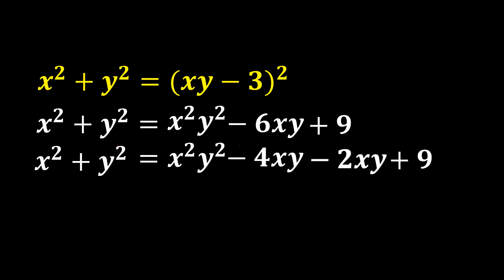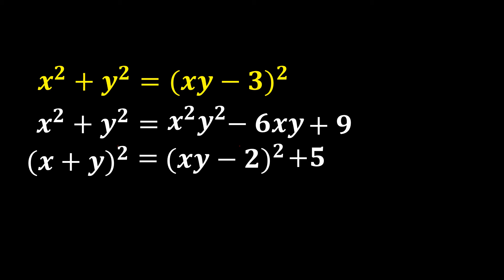We will take -2xy to the LHS. It will frame the left-hand side as the (x + y)² identity. If we split 9 as 4 + 5, then the first three terms give us the (xy - 2)² identity. So we can write: (x + y)² = (xy - 2)² + 5.